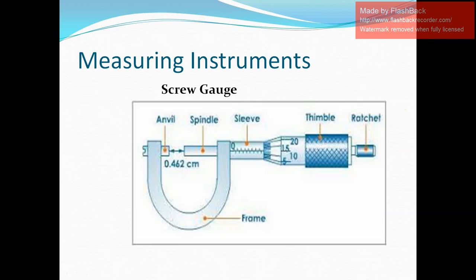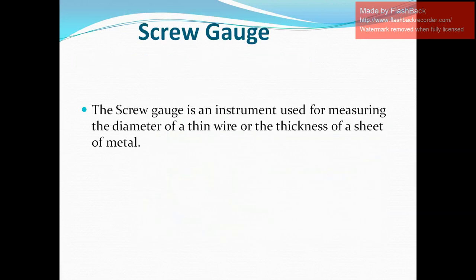The screw gauge is a device which is used to measure very small lengths, up to 0.01 millimeters. It is an instrument used for measuring the diameter of a thin wire or the thickness of a sheet of metal. Very thin wires and very small thickness sheets can be measured with the screw gauge.